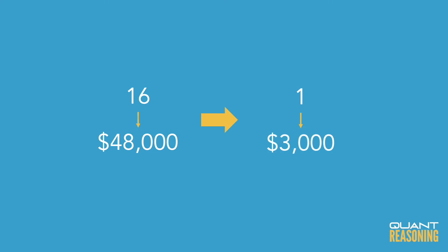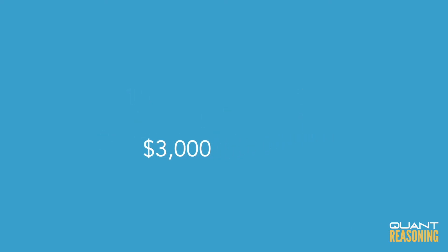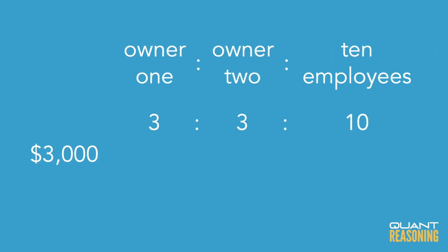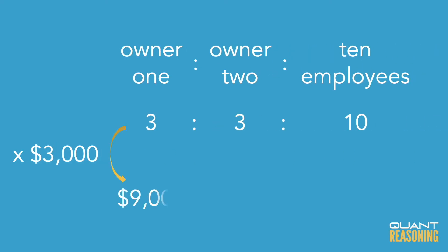What I did there is I divided 48,000 by 16 and got 3,000. Now that might not be very easy for you to see or to compute, so I'll show you another way in just a second. Once I found the scale factor of $3,000, I can apply that to either one of the owners — they're the same. Three ratio units multiplied by the $3,000 scale factor gives you the answer of $9,000.